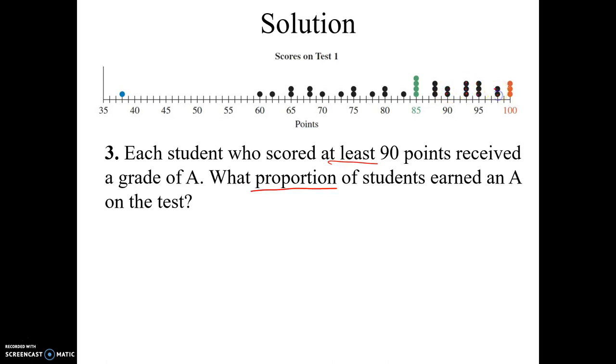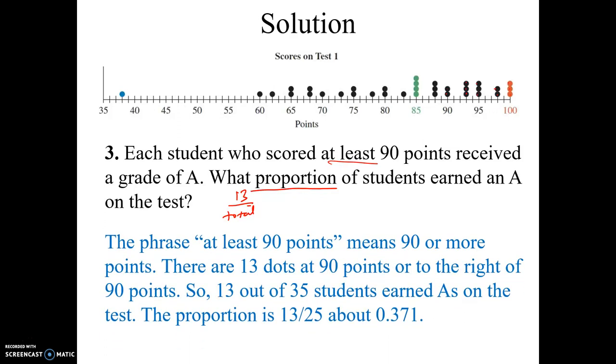So we have 13 students who earned an A on the test. Now to get a proportion, you have to divide 13 by the total number of students who took the test. There are 13 dots at 90 points or above, and a total of 35 students earned a test. So if we take 13 out of 35, a proportion, it's always going to be the number of people divided by the total.